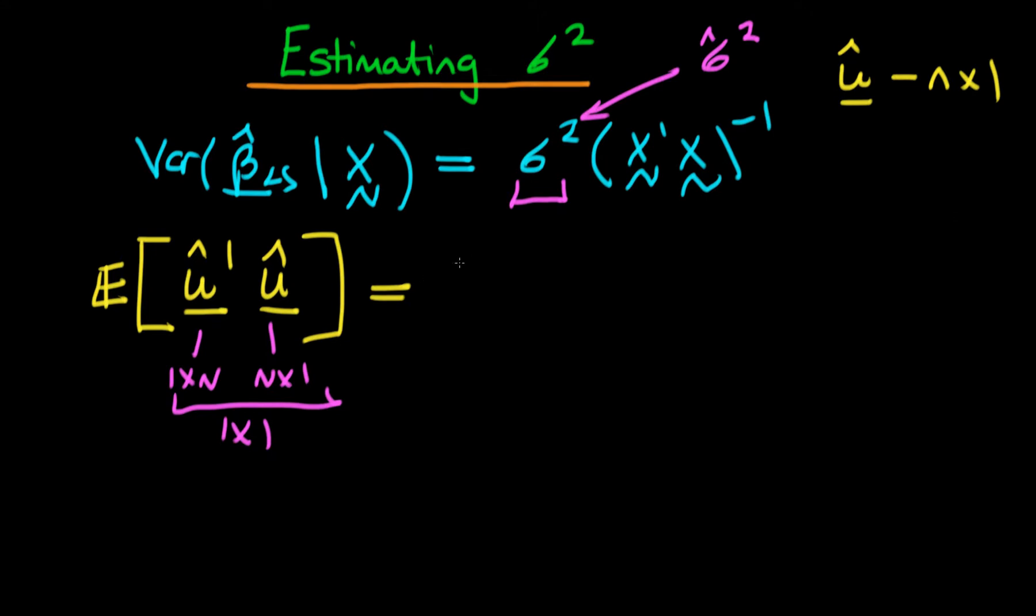So that sounds about right. But what exactly are we doing here? What we're doing is we're taking the expected value of the residual vector transposed, so that's just going to be u hat 1, u hat 2, all the way through to u hat n. And then we're multiplying it by the original residual vector, which is u hat 1 all the way through to u hat n.